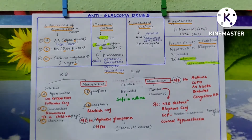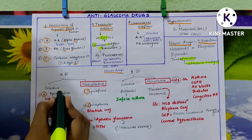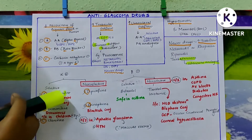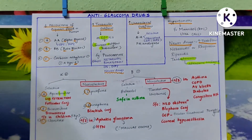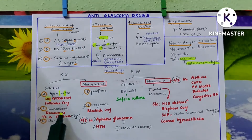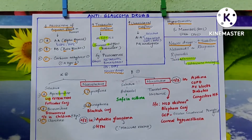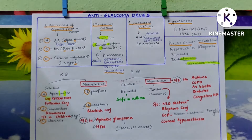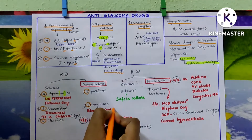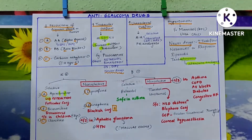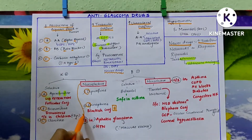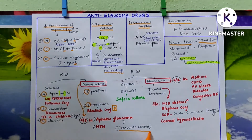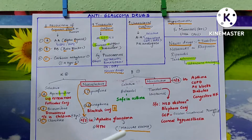Apraclonidine causes lid retraction — in the name 'apraclonidine' you have 'lid' in it, so lid retraction. Brimonidine causes drowsiness, so it is contraindicated in children less than two years of age. For non-selective alpha agonists, epinephrine causes blackish conjunctivitis — this is an important previous year exam question: which anti-glaucoma drug causes blackish conjunctivitis? That is epinephrine.